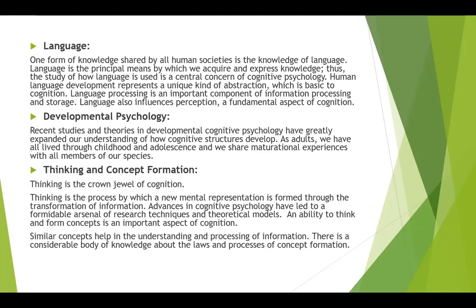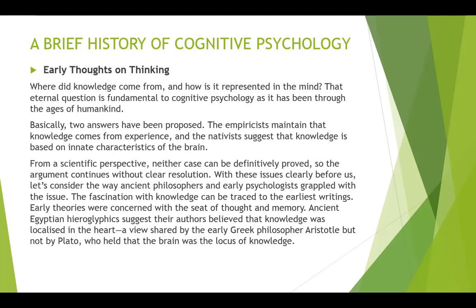A brief history of cognitive psychology. Early thoughts on thinking: where did knowledge come from and how is it represented in the mind? That eternal question is fundamental to cognitive psychology. Basically two answers have been proposed: empiricists maintain that knowledge comes from experience, while nativists suggest that knowledge is based on innate characteristics of the brain. From a scientific perspective, neither can be definitively proved, so the argument continues without clear resolution.